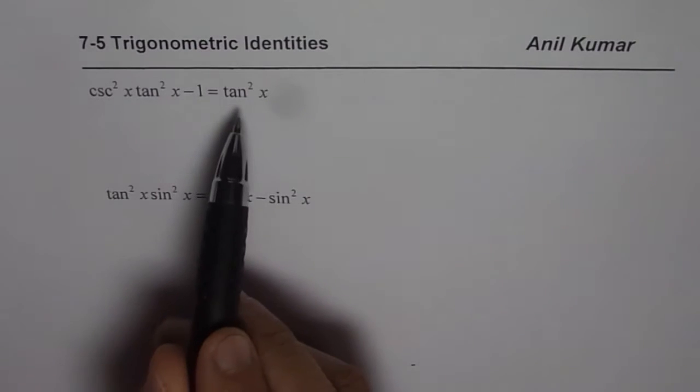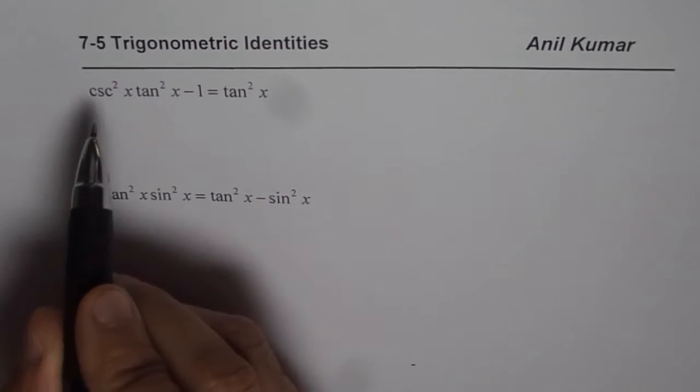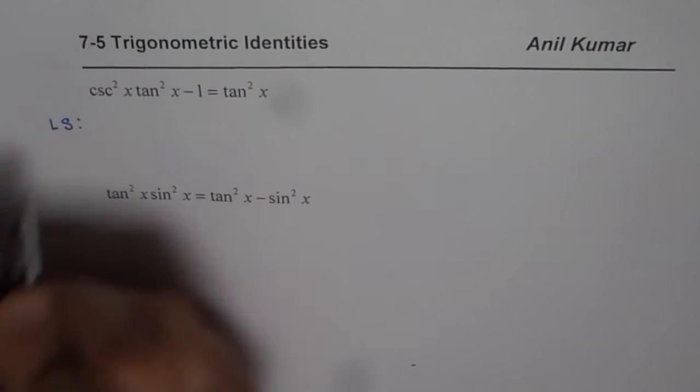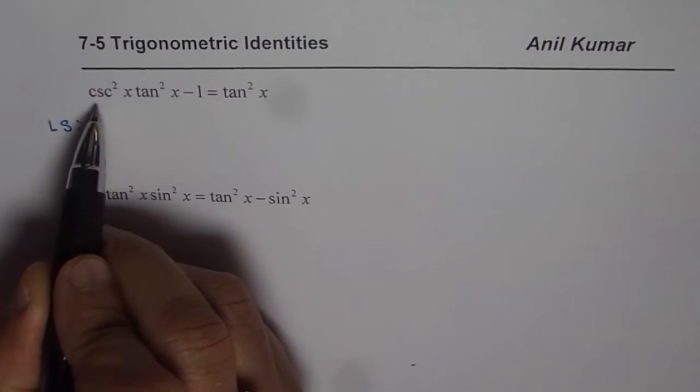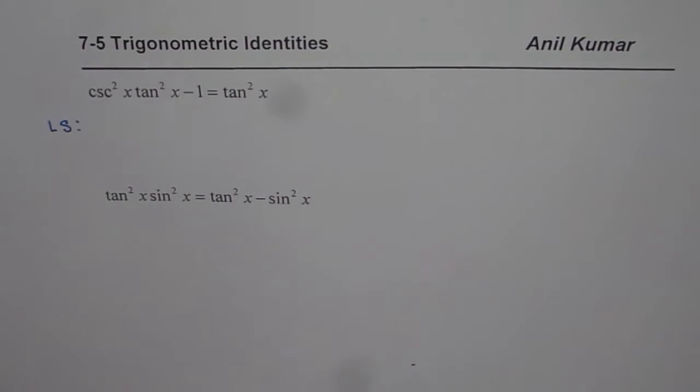Now in this particular case we see that we need tan square x on the right side. We can begin with the left side, so let me write left side first. Since left side is more complicated, it is always a good idea to start with a complicated side.